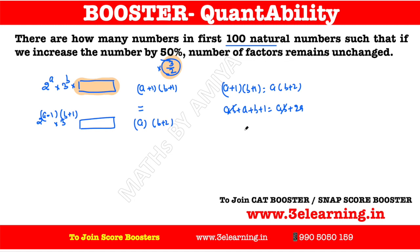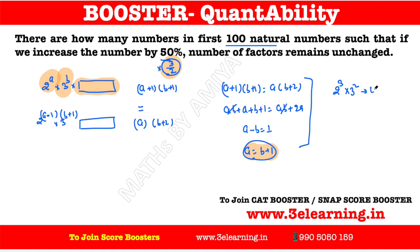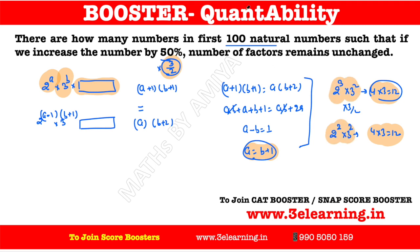According to the question both are the same, so: (a+1)(b+1) = (a)(b+2). Expanding: ab + a + b + 1 = ab + 2a. The ab cancels out, giving us our condition. If you multiply by 3/2, meaning a 50% increase, then the power of 2 decreases and the power of 3 increases. The number of factors remains unchanged. So we have our condition and let's solve this in cases.